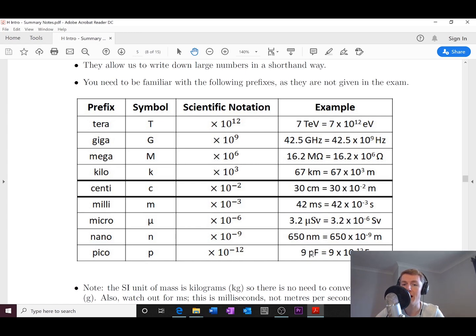So sometimes we use pico when we're talking about capacitance of a capacitor in the electricity topic for Higher. So an example would be 9 picofarads is 9 times 10 to the minus 12 farads, and that's your unit of capacitance, which you'll see when you do electricity.